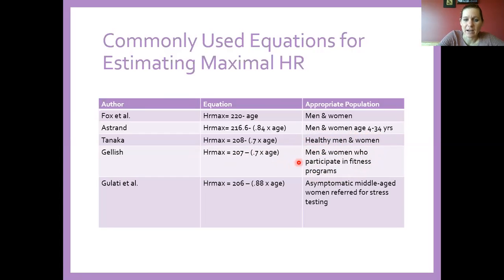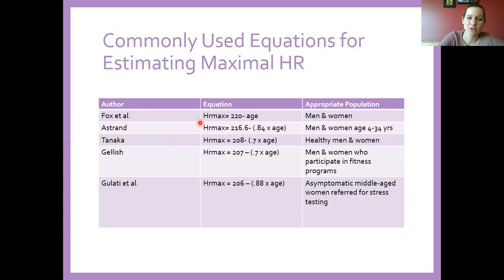There's also a formula specific to asymptomatic middle-aged women referred for stress testing — a really specific population. I don't need you to memorize each of these; I just want you to appreciate that there are multiple ways to calculate heart rate max. If I were you, I'd stick with the easiest version — 220 minus age — for all of your clients. That'll be fine for purposes in our class.